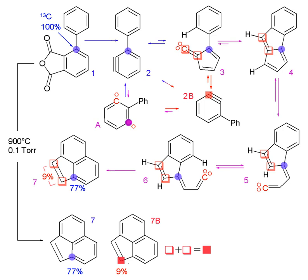See also isotopic signature. A radiogenic isotope tracer involves an isotope produced by radioactive decay, which is usually in a ratio with a non-radiogenic isotope whose abundance in the earth does not vary due to radioactive decay.